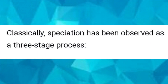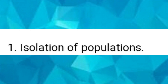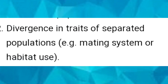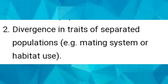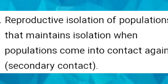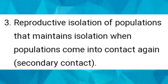Classically, speciation has been observed as a three-stage process. The first is isolation of population. The second is divergence in traits or characters of the separated population, for example mating system or habitat use. The third is reproductive isolation of the population that maintains isolation when populations come into contact again — that is secondary contact.